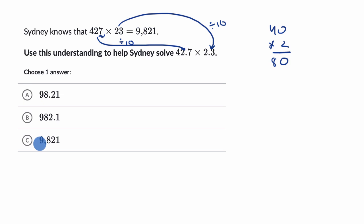This is 9,800 something. This is 980 something. This is 98. This one is the one that is closest to 80.